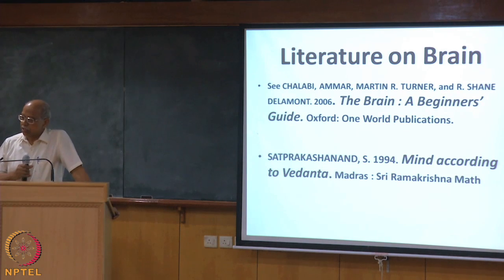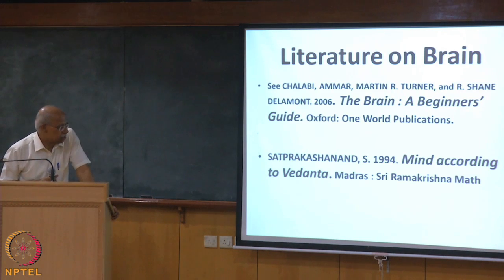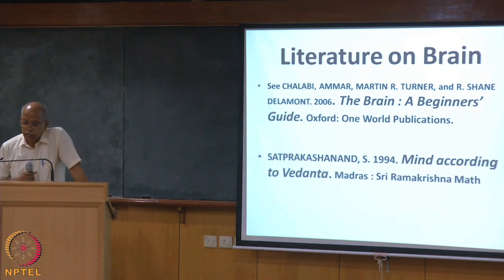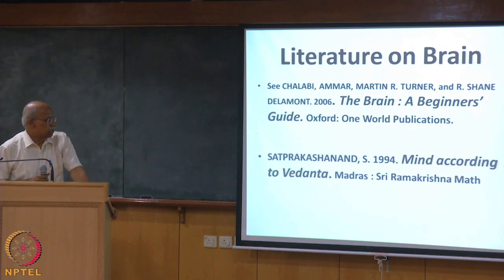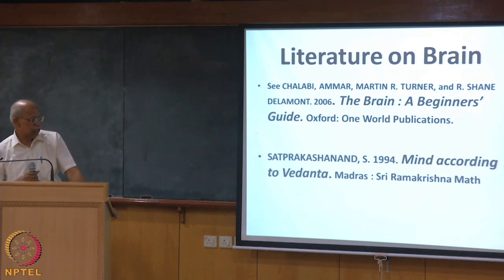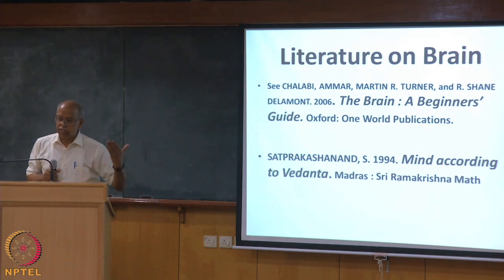For those interested in reading about brains, lots of books and articles — popular and academic — are written frequently. Two books of recent origin that may be understood by all of us: one by Dr. Chalavi, a neurosurgeon of Egyptian origin working in the UK, who with colleagues wrote a beginner's guide on the brain. A still better book, cheaper and more readable, is by Swami Satprakash Anandaji, published by Ramakrishna Mutt — 'Mind According to Vedanta.' We have a different tradition of understanding mind, distinguishing between mind, brain, and body in ways Western science has not yet clarified.